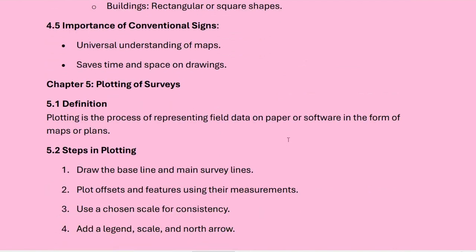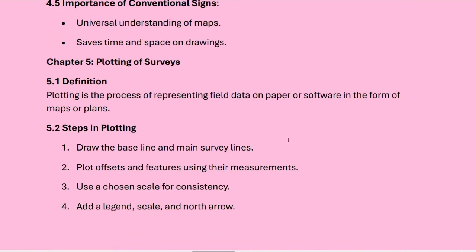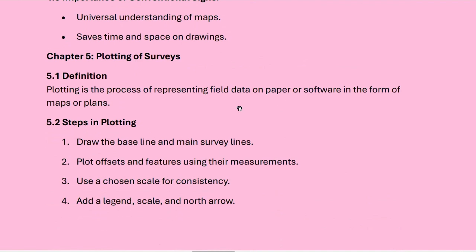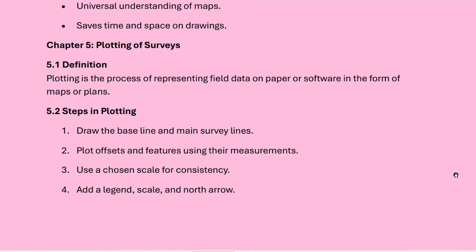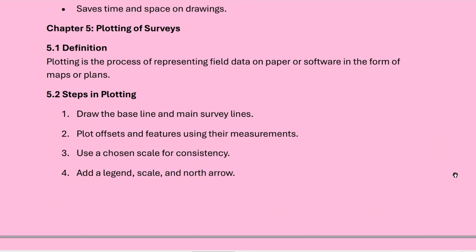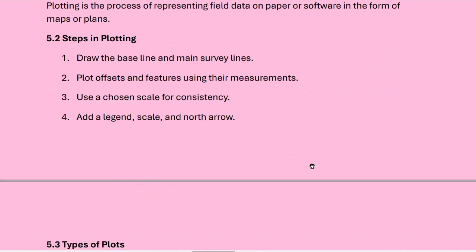Now come to the plotting of the survey. Plotting is the process of representing field data on paper or software in the form of maps or plans. The steps in plotting: first, draw the baseline and main survey line; next, plot offsets and features using their measurements; then use a chosen scale for consistency; and finally add a legend, scale, and north arrow.